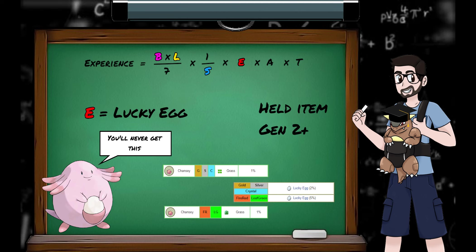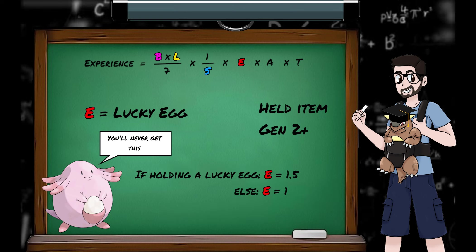Chansey are already elusive boogers, and the fact that Chansey only have a 2 or 5% chance of holding the egg makes them very lucky indeed. If one of your participating Pokemon is holding a Lucky Egg, their gained experience will be multiplied by 1.5. If a Pokemon doesn't have the egg, E has a value of 1.